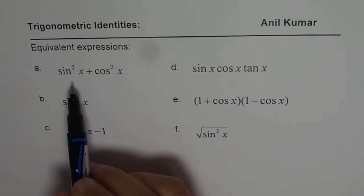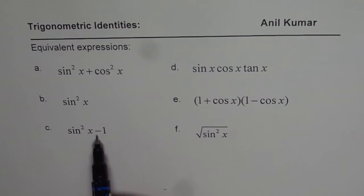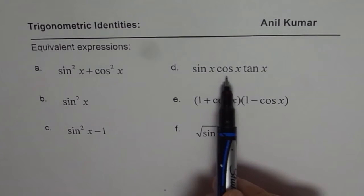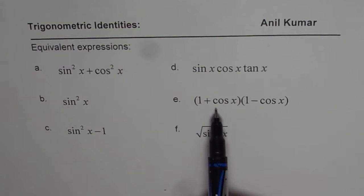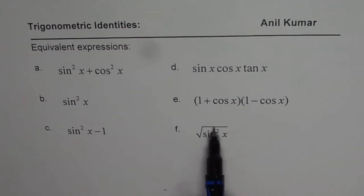First one is sine square x plus cos square x. Then we have sine square x, sine square x minus 1. Sine x cos x tan x, 1 plus cos x times 1 minus cos x. And this is very tricky. Square root of sine square x. Write on your solutions, then look into my solutions, right?